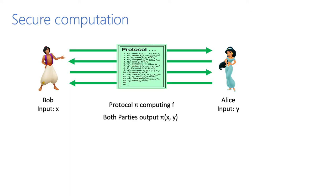Today we will talk about secure computation. We consider the two-party setting. There are two parties who have their private inputs x and y. They want to jointly compute a function f on their inputs. To do so, they run a protocol pi on their inputs and output the protocol output. The protocol should satisfy two properties.